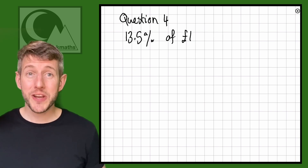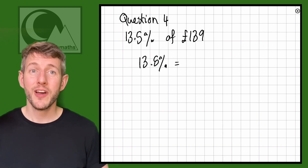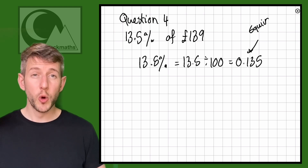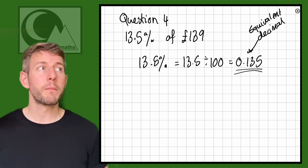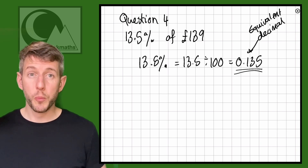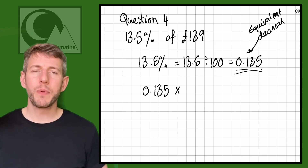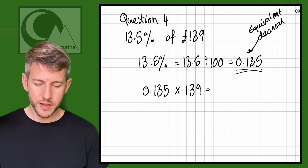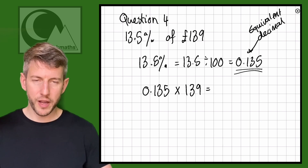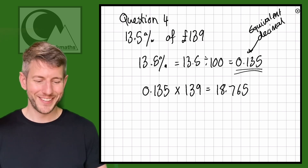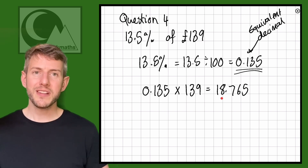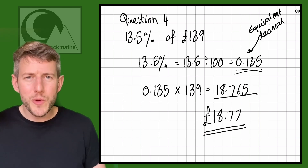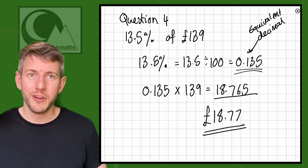Last question, question four: 13.5% of £139. We do 13.5 ÷ 100 = 0.135. So the decimal equivalent of 13.5% is 0.135. Now we multiply: 139 × 0.135 = 18.765. So 13.5% of £139 is £18.765, which we'd round to £18.77 as it's pounds and pence.